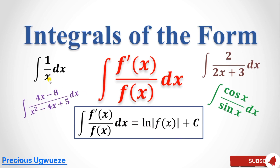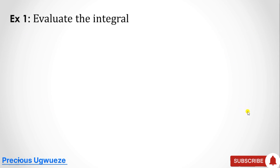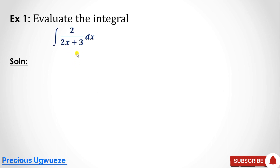For instance, the derivative of x is 1, so the integral gives you the natural log of x, which is the denominator. Here you can see the derivative of this denominator is 2, so it applies. Let's look at some examples. The first example says we should evaluate the integral of 2 over (2x + 3).